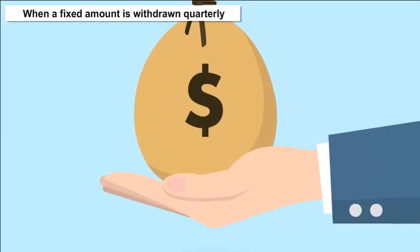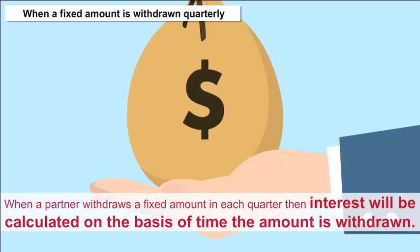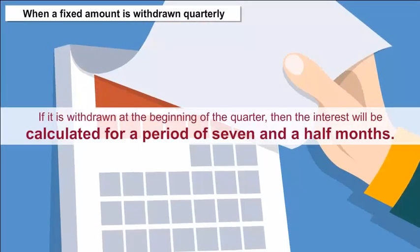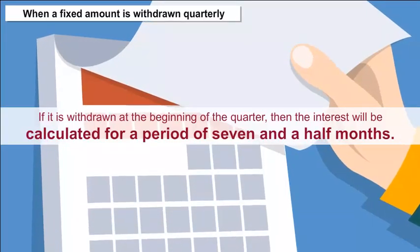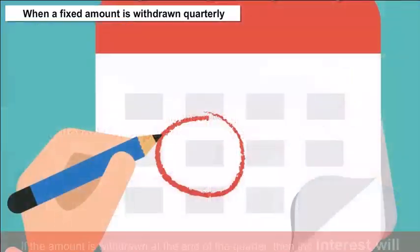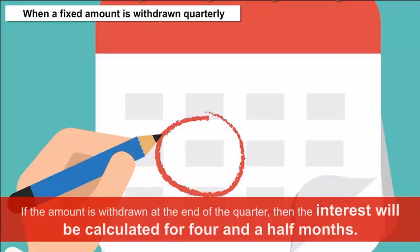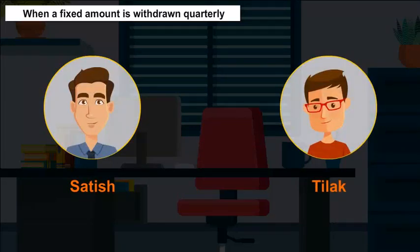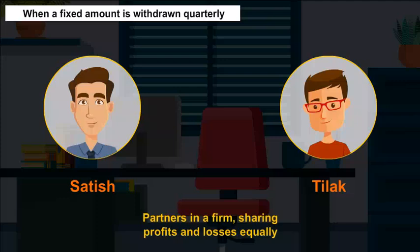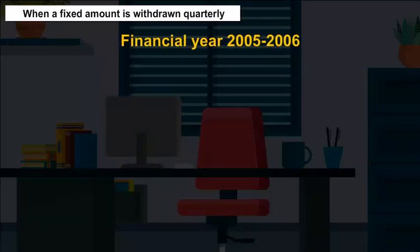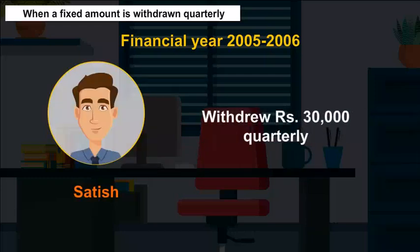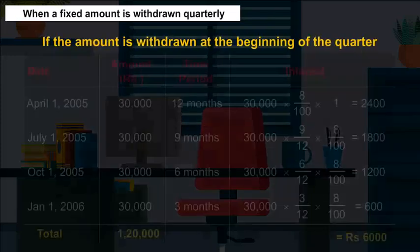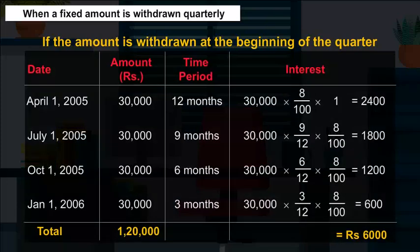Interest on Drawings — When a fixed amount is withdrawn quarterly: When a partner withdraws a fixed amount in each quarter, interest will be calculated on the basis of when the amount is withdrawn. If it is withdrawn at the beginning of the quarter, the interest will be calculated for a period of 7 and a half months. If the amount is withdrawn at the end of the quarter, the interest will be calculated for 4 and a half months. For example, Satish and Tilak are partners in a firm sharing profits and losses equally. During the financial year 2005-2006, Satish withdrew Rs. 30,000 quarterly. If interest is to be charged on drawings at 8% per annum, the calculation of average period and interest on drawings will be computed accordingly.